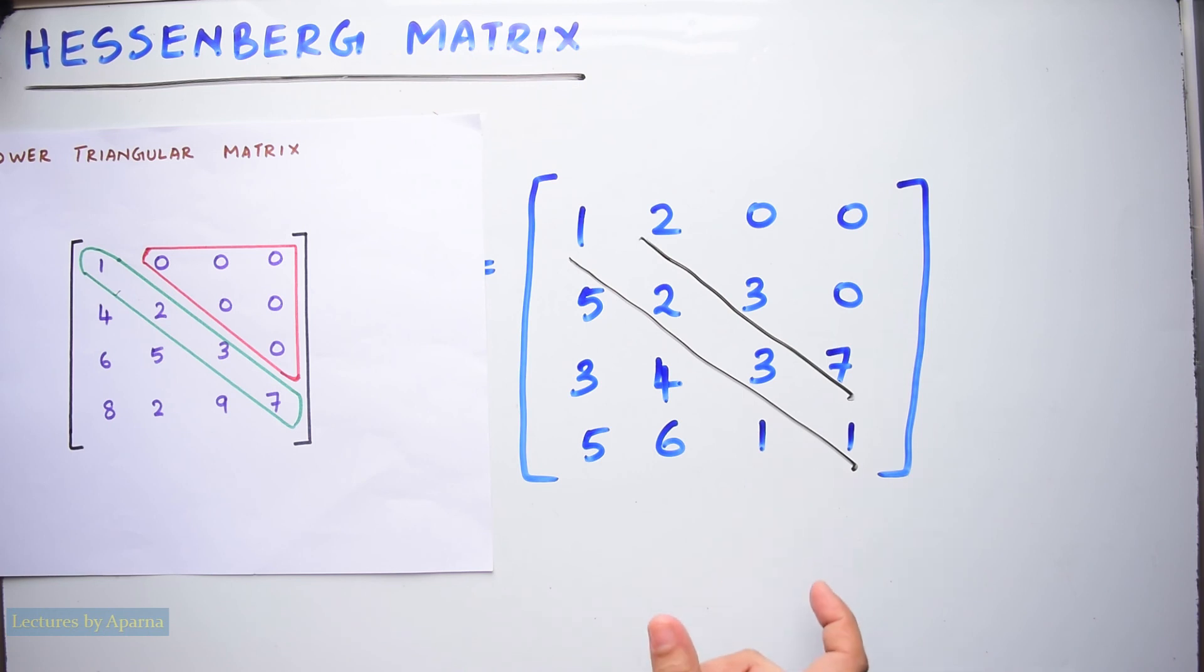So, this is the slight difference between a Hessenberg matrix and a triangular matrix. If this video has helped you, please do subscribe to my channel. Also, don't forget to like and share this video. Thank you.